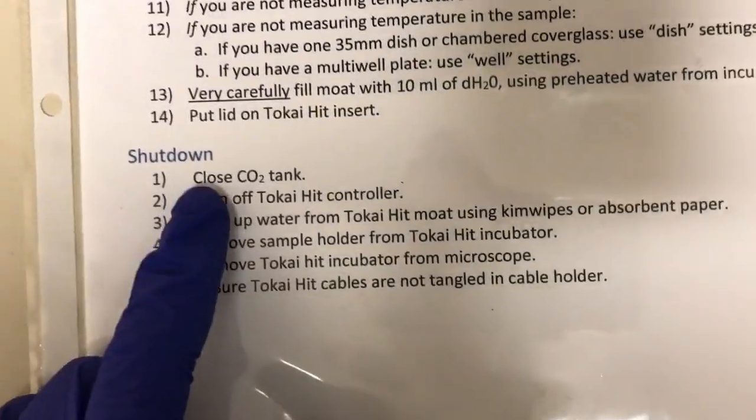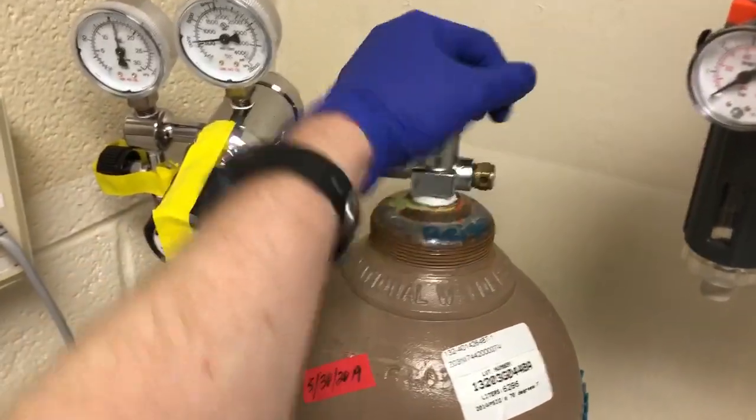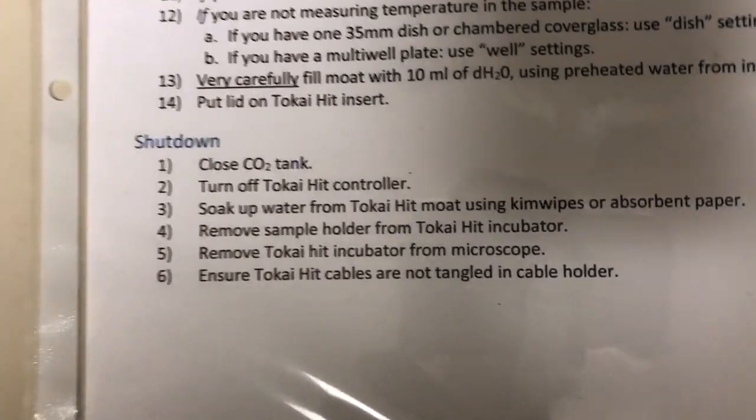So, to clean up, we're going to close the CO2 tank by turning this clockwise. We're going to turn off the Tokai Hit controller.